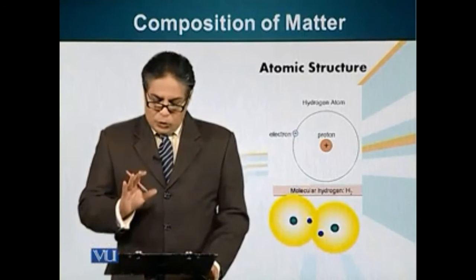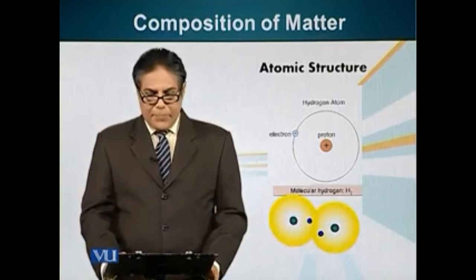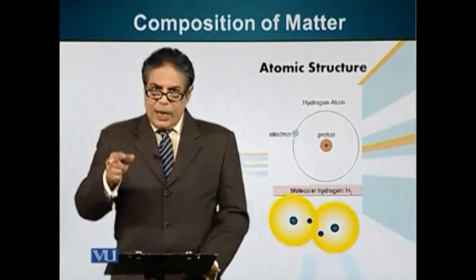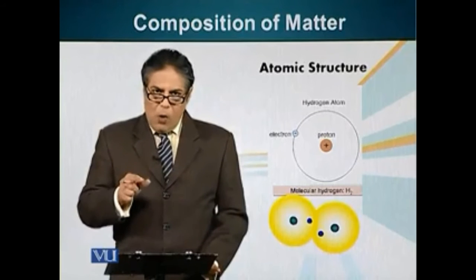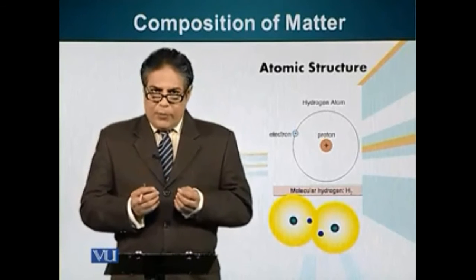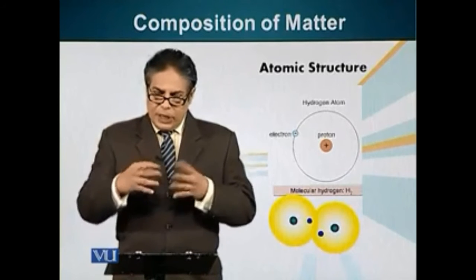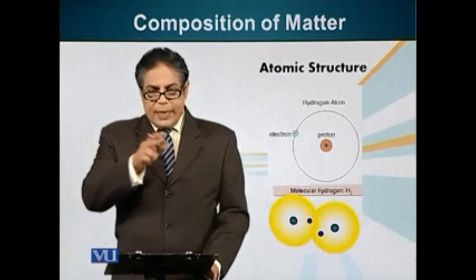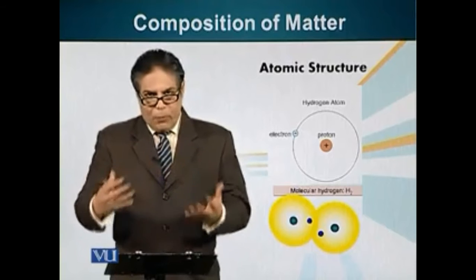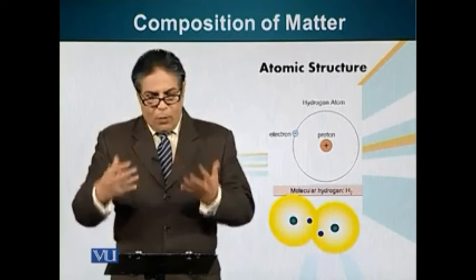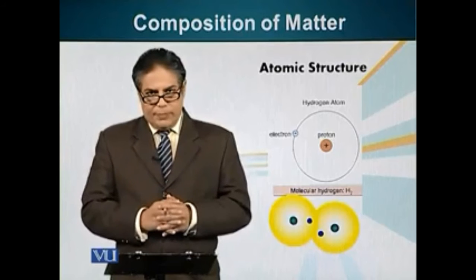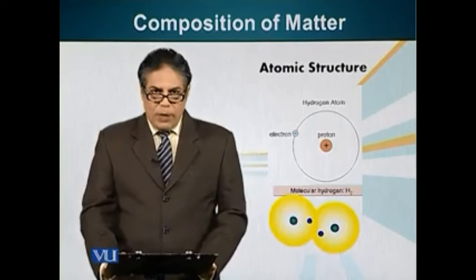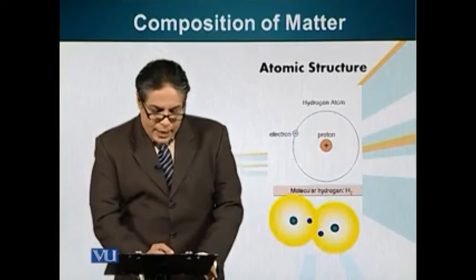Forming bonds allows hydrogen atoms to share electrons with other atoms. Let's look at two hydrogen atoms forming a bond between them. Two hydrogen atoms can come close together and they can share one electron each. Now when they are sharing these electrons, there are two electrons present in the orbital around the positively charged nucleus. These two electrons, when they revolve in that orbital, give stability to the structure.